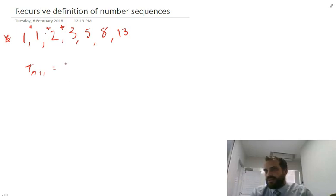If this is T_n+1, I need to take T_n and add it to T_n-1. Okay, this general formula is going to allow us to sort of build up the Fibonacci sequence that we've got here.